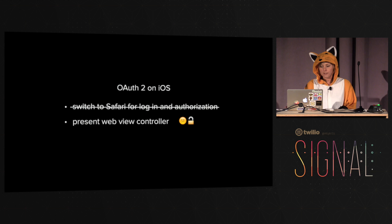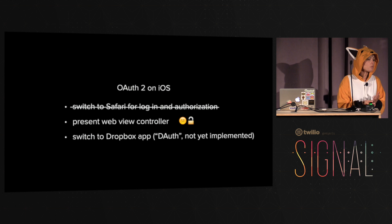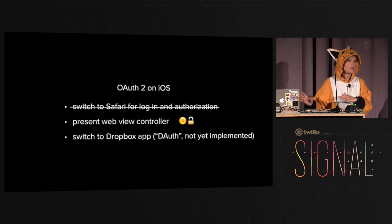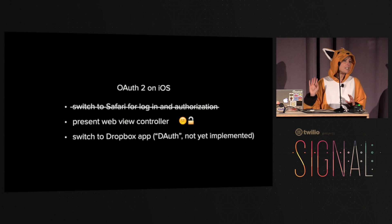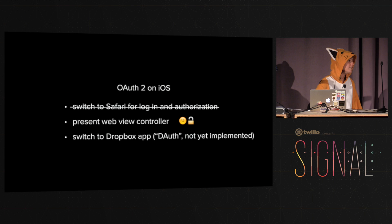Dropbox actually made something called dAuth — for Dropbox auth — where we switch to the Dropbox app to log you in. If you have the app installed and are already logged in, it's a super fast process: it just says 'do you want to authorize this app?' you say yes and it switches back. This is our preferred method. Currently the Swifty Dropbox SDK hasn't implemented this yet because it requires some work with our iOS client team, but it will be coming soon. We fall back to presenting a view controller if the user doesn't have the Dropbox app installed.